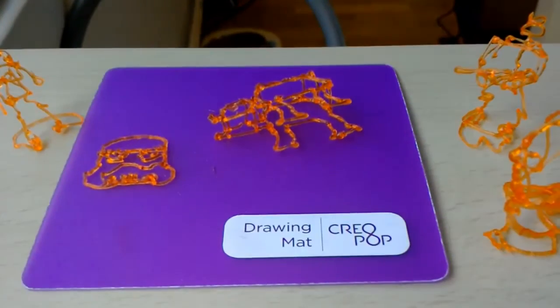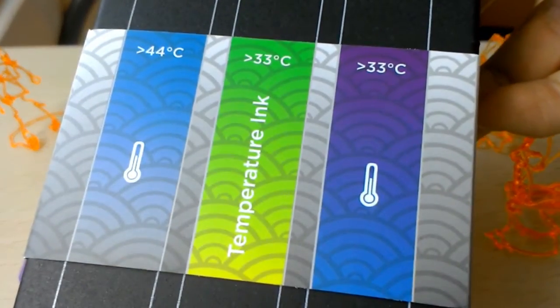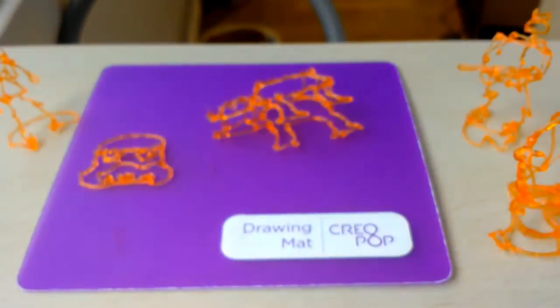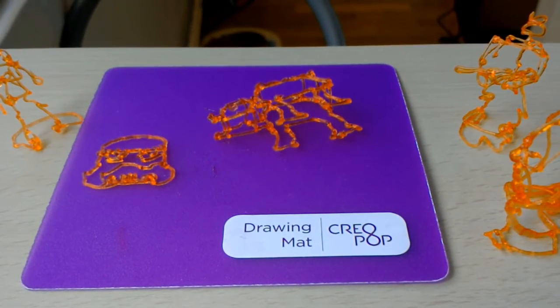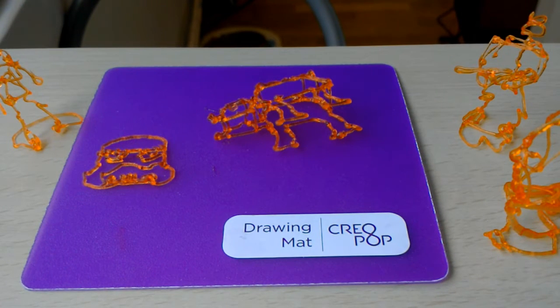As well as special inks. For example, this one changes its color in different temperatures. And they also have a glowing one, elastic, aromatic, body paint, magnetic, conductive, glittering things as well.